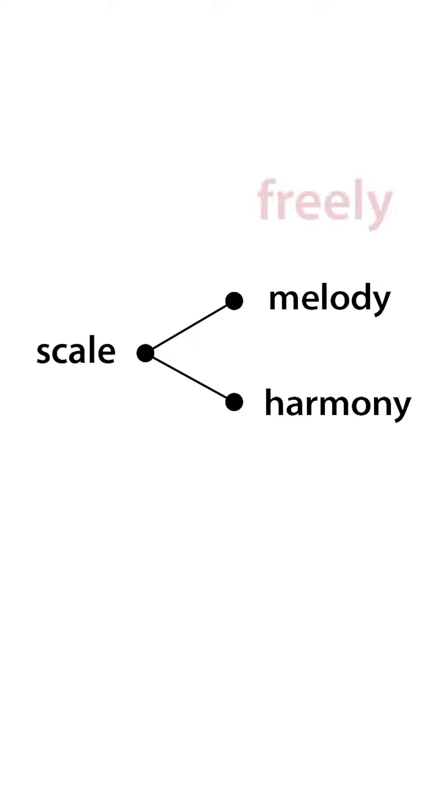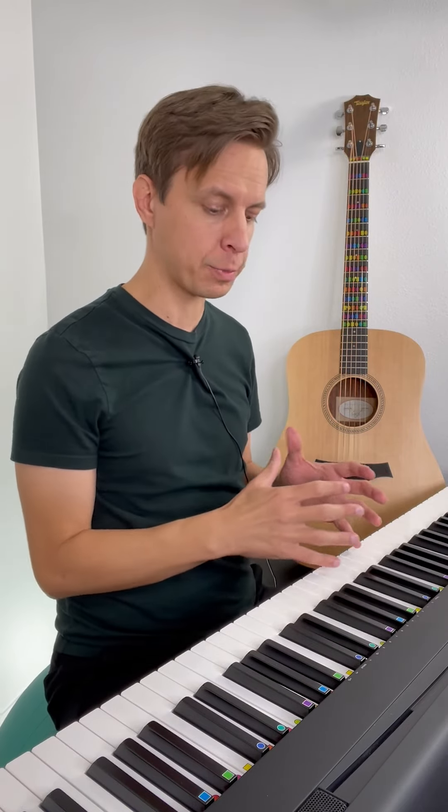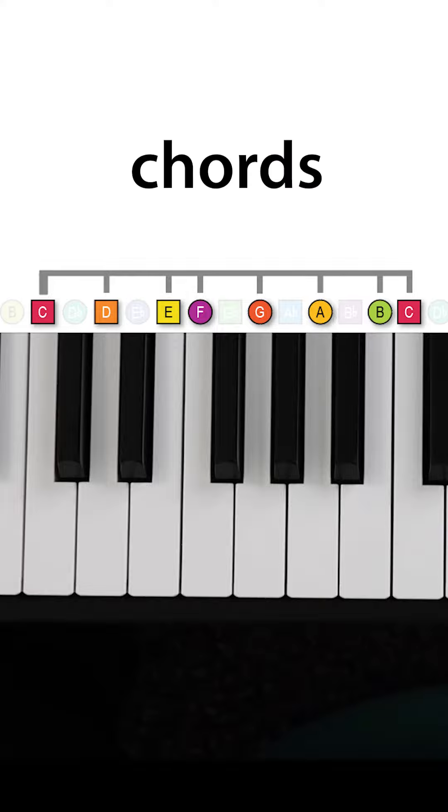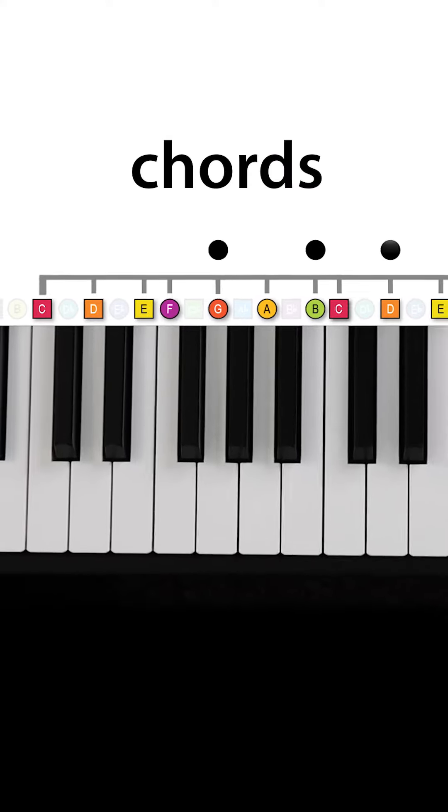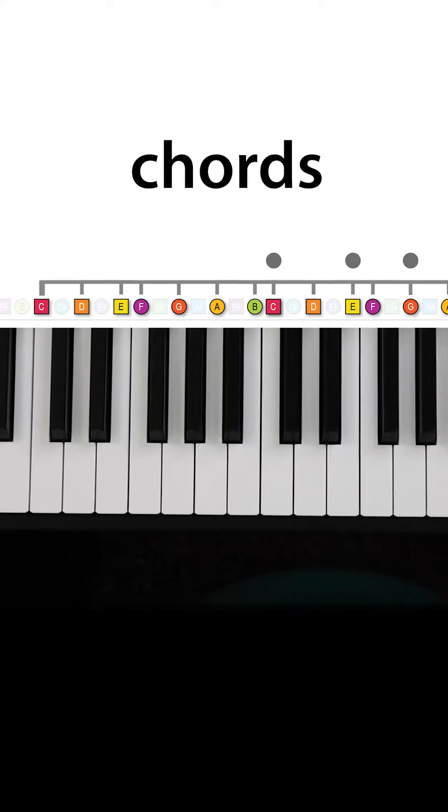But instead of rearranging the notes freely, like in a melody, chords are built through a more formal structure of what are called tertian intervals. The word tertian is just Latin for thirds, meaning the notes in a chord are spaced by intervals of a major third or minor third. And it's easy to build these chords, because all you have to do is combine every other note of the underlying scale to form all the chords in a key.